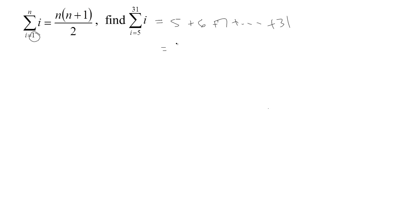But here's an idea. If I were to take the sum 1 plus 2 plus 3 plus 4 plus 5 plus 6 and so on up to 31, so if I would start at 1, then all I need to do is remove this part. So I just need to take away the sum 1 plus 2 plus 3 plus 4 and I'll be okay.